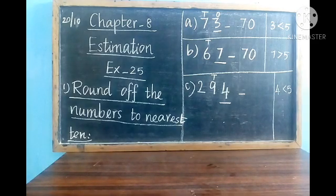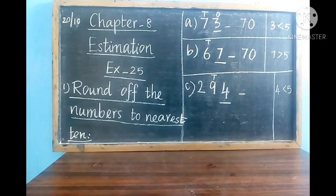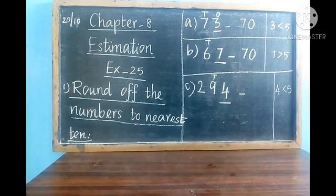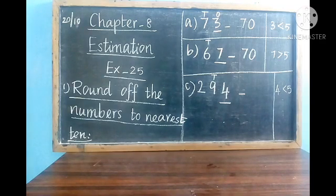When rounding off numbers, in the ones place we should write 0. If we are rounding numbers to nearest 10, then the ones place should be 0. If we are rounding off to nearest 100, then the tens place and ones place should both be zeros.